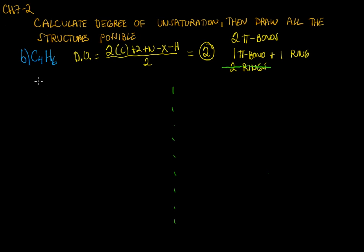Let's think about two pi bonds. First, think about the carbon backbone. We could have four carbons in a line or four carbons that are branched to start with.